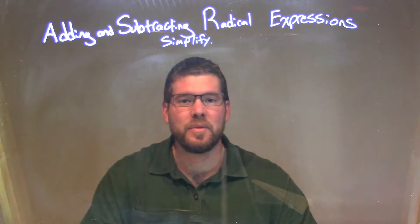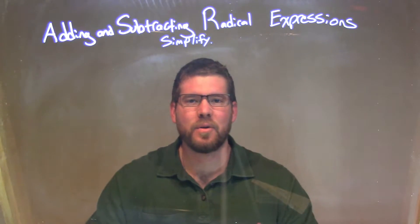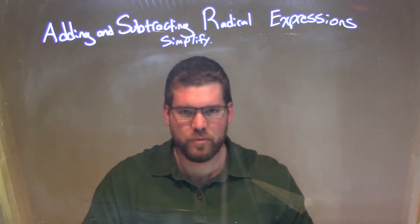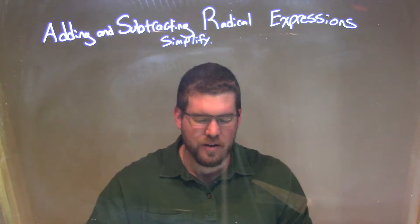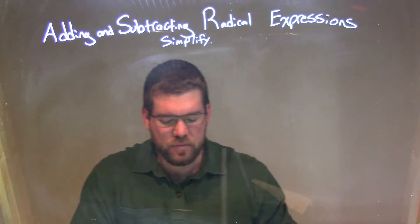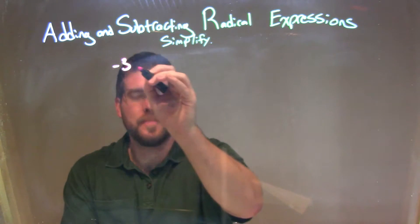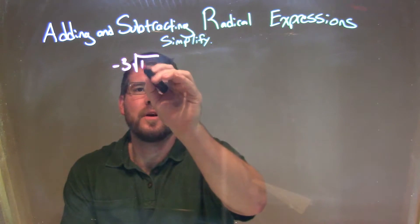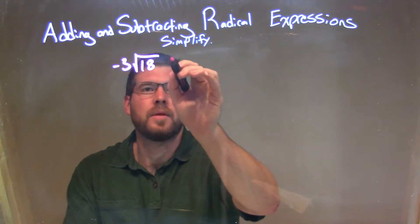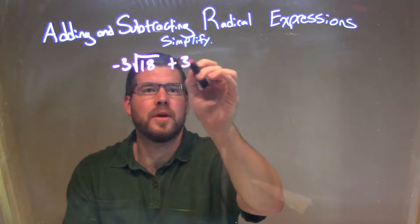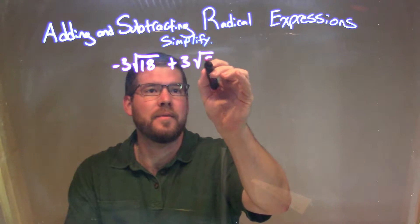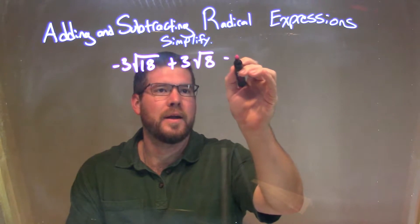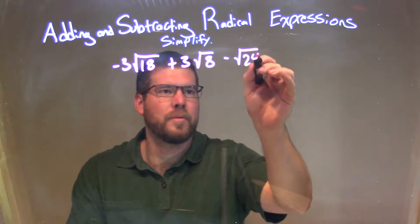Hi, I'm Sean Ginn, and this is MinuteMath. Today we're going to learn about adding and subtracting radical expressions. So if I was given this expression: negative 3 times the square root of 18, plus 3 times the square root of 8, minus the square root of 24.